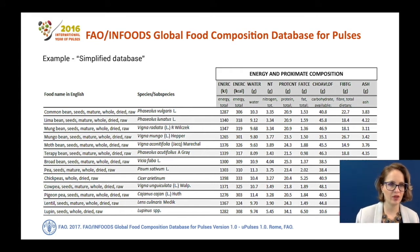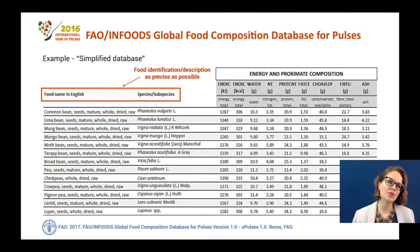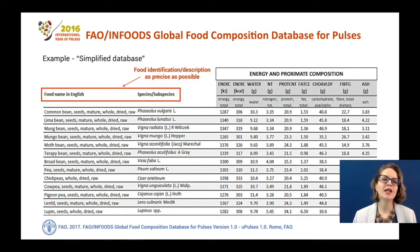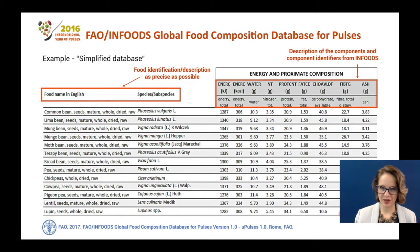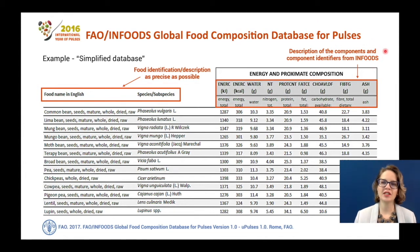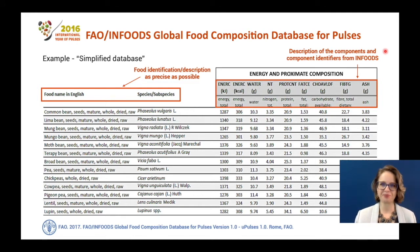What type of information can we find here? In the first two columns we can see the food description — the food name in English, and also the species and subspecies for each of the foods presented. In the second part we have the actual nutrient content of the foods — the description of the components and also the component identifiers for mean foods, which are extremely useful and important in food composition tables. All these nutrient contents are expressed per 100 grams of food in edible portions.